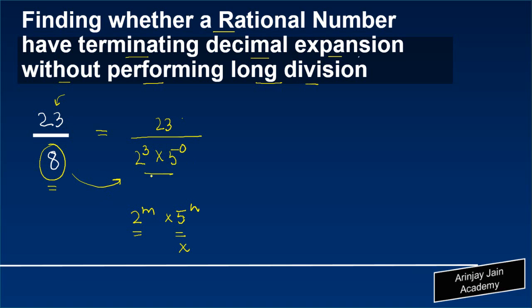Now we know that when we write a rational number in this form 2 to the power m into 5 to the power n, if it is possible to write it in such a manner where m and n are non-negative integers, that means that this number will have a terminating decimal expansion.